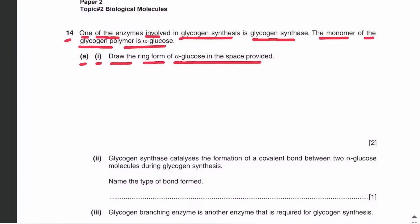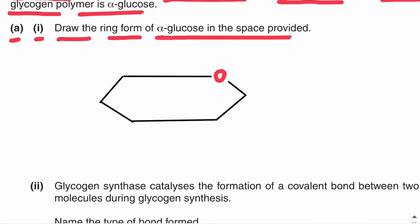Let's draw the ring form of the alpha glucose molecule. The ring of alpha glucose is hexagonal, which means it has six sides, and at one side there is an oxygen atom. There are six carbons in glucose — carbon number one, two, three, four, and five are in the ring, and carbon number six is out of the ring.